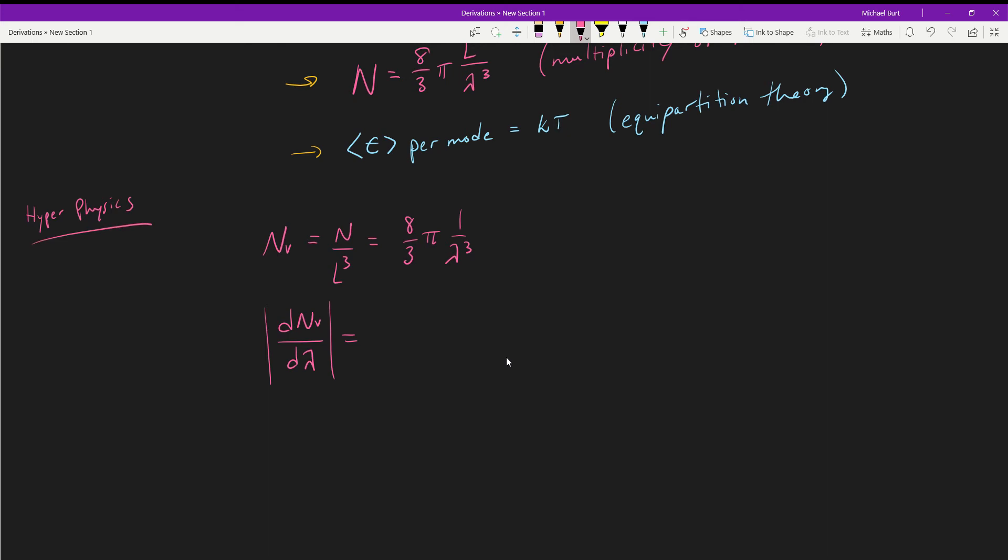A lot of this latter stuff comes from hyperphysics, so I highly recommend you check out their website for this derivation. When we take this derivative we get 8 over 3 pi, the negative 3 comes down, so we get negative 3 and then 1 over lambda to the 4. In magnitude we get 8 pi, 1 over lambda to the 4.